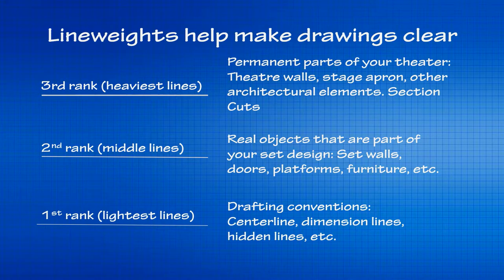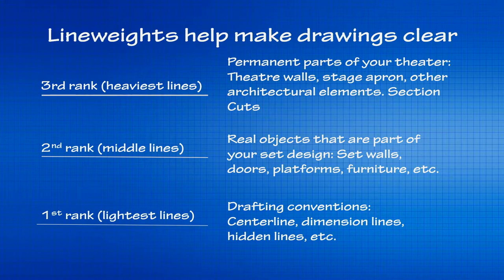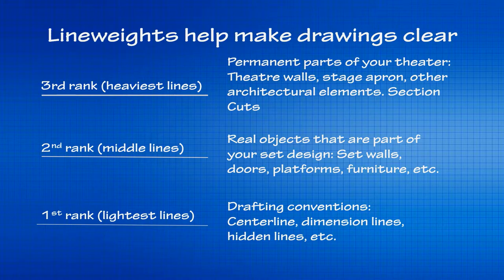Second-ranked lines are for real things you're putting on stage: walls, steps, props, furniture — things that can actually be interacted with. It should be a nice bold solid line, but not so thick it's hard to see details, and not so thin it blurs in with the dimension lines. The first rank — the lightest lines — are for things that aren't real. We don't build a center line, we measure to one. So dimension lines, hidden lines, the arc of a door swing — things important for communicating what we're looking at, but not physical things we'll build. If second and first rank lines get too close, it's hard to tell a dimension line from an object line, so keep them nicely separated.